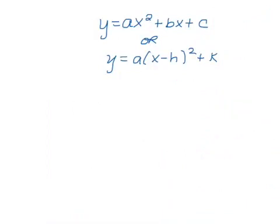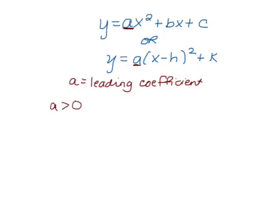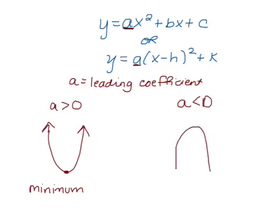Here we have the two different forms that a quadratic equation can be written in. The first one we call general form and the second one we call vertex form. Both forms have the same letter 'a', which is called our leading coefficient. That leading coefficient tells us what our graph is going to look like. If the leading coefficient is greater than zero — meaning it's positive — then we're going to have a parabola that opens upwards.